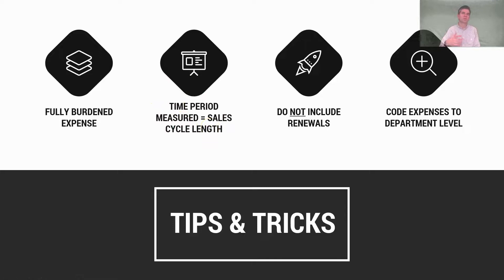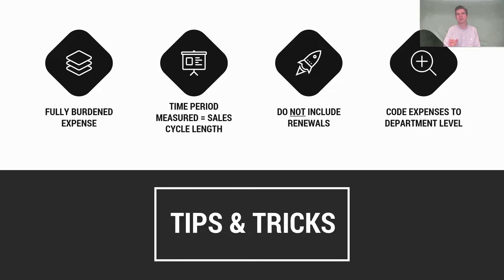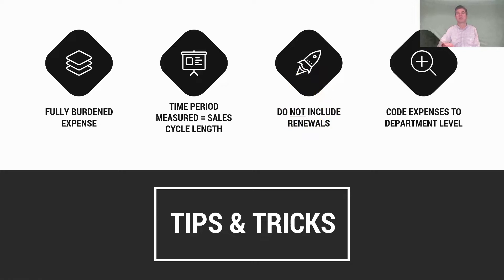Whether you have a one-month, three-month, or twelve-month sales cycle, measure the new ARR and sales and marketing expense over that same time period. For a twelve-month sales cycle, you'd measure trailing twelve months of new and existing ARR and sales and marketing expense. And remember: do not include renewals in this number, because that is not new business or expansion business you're acquiring — unless you're expanding those existing customers.